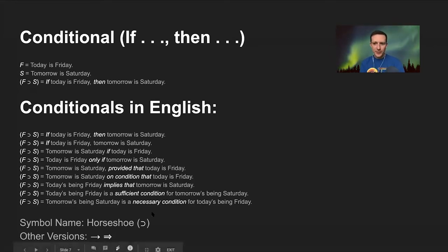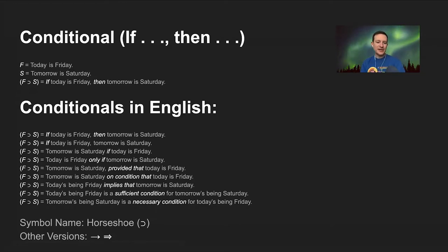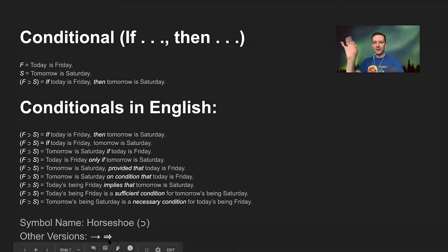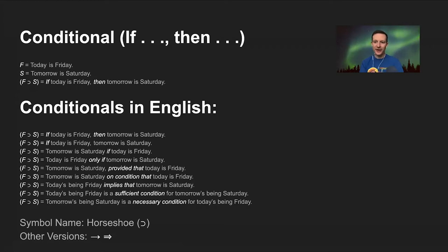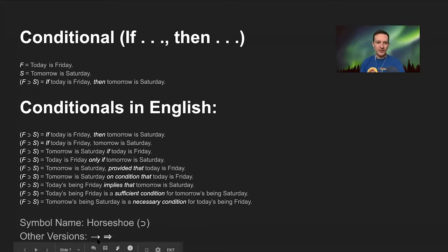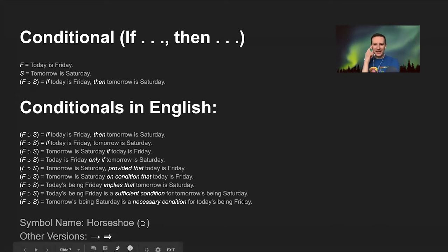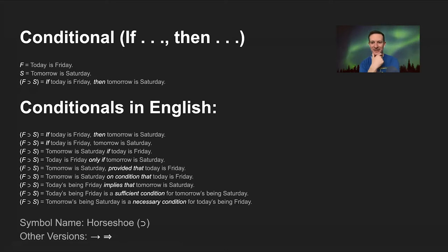Your textbook uses the horseshoe symbol to represent a conditional. Other textbooks use a single arrow or a double-line arrow. Most textbooks use either a horseshoe or a single arrow, but your textbook uses the horseshoe.